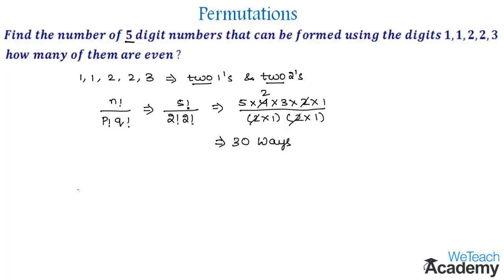Now to find the even numbers, fill the units place by two. The remaining four places can be filled using the remaining digits 1, 1, 2, 3 in four factorial divided by two factorial ways, as one is repeated two times.